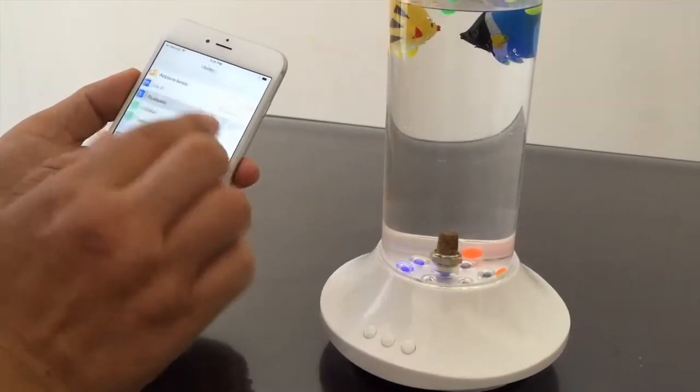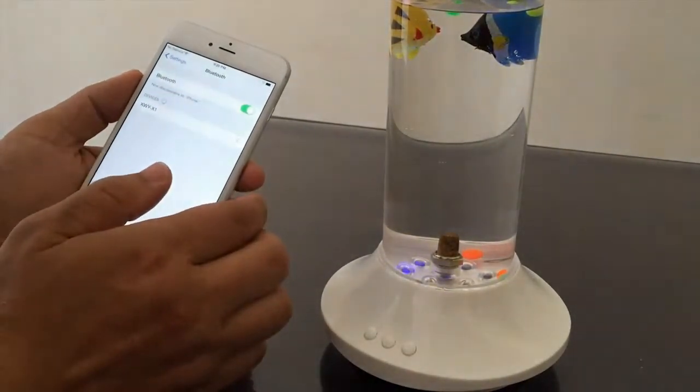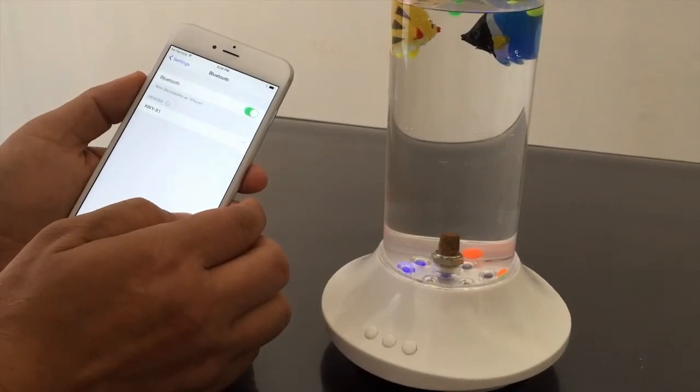Now when you first power on the fish tank, it will automatically go into sync mode. Once your phone finds the device, just press and sync.